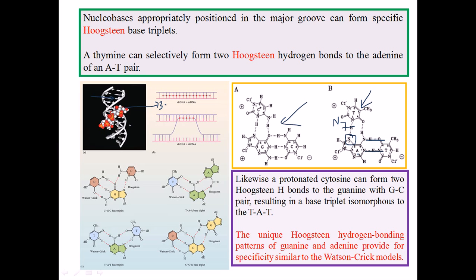The unique Hoogsteen hydrogen bonding patterns of guanine and adenine provide specificity similar to Watson-Crick, so the complementary nature of DNA is not disrupted. This type of triple-stranded DNA can also be formed by the interaction of two dsDNA molecules. We can observe this kind of triplex structure during DNA repair and DNA recombination.